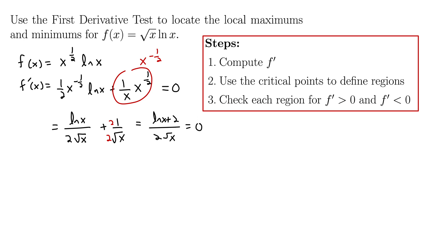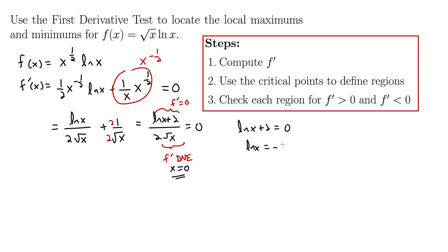Now we look at the bottom and top. The bottom tells us where f prime does not exist — at x = 0, because that gives us zero in the denominator, so that's one critical point. Setting the numerator equal to zero: natural log x + 2 = 0, so natural log x = −2. To solve this, we take both sides base e — the e and the natural log undo each other — and we get x = e to the negative 2, or equivalently 1 over e squared.